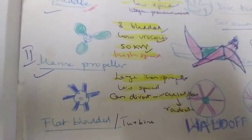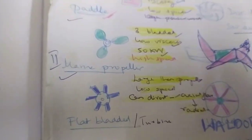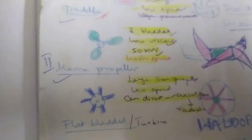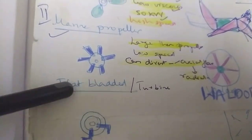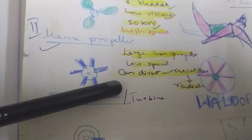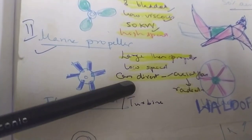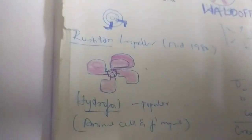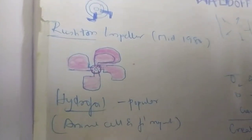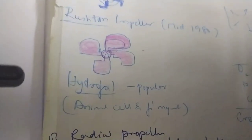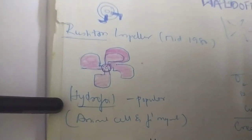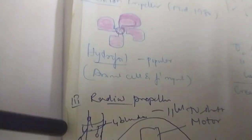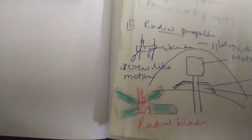The paddle type is for low speed whereas the marine propeller is for high speed. You can see the blades are fixed in a specific pattern. The flat-bladed turbine has fixtures perpendicular to the circular disc — it is used for low speed. One advantage of the marine propeller is it can divert from axial flow to radial flow. There is another category called Rushton impellers, designed in the late 1980s, also called hydrofoil, popular for animal cell and fungal mycelial fermentation processes.